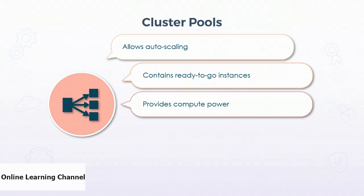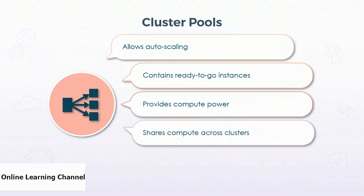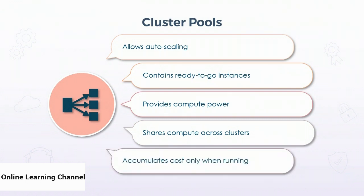However, if there are not enough nodes in the pool, it will spool up new ones which is slower. When the cluster no longer needs the nodes, it will release them back to the pool to be reused by any clusters in the pool. This shares the compute nodes across the clusters in the pool. One of the nice things about cluster pools is that each compute node only accumulates cost when it's running, not when it's idle in the pool. This means cost will be scaled up or down along with the clusters, conserving cost.